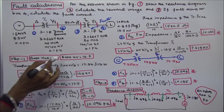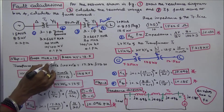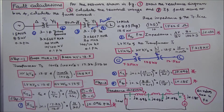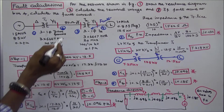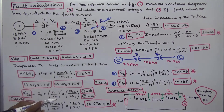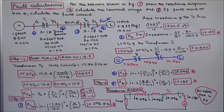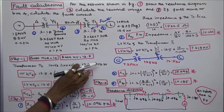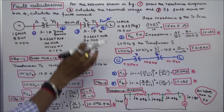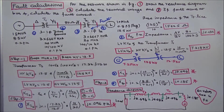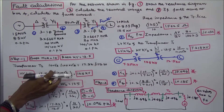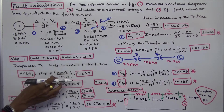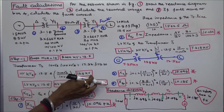Step 1: I choose base MVA and base kV. Base MVA equals 10, base kV equals 12.5. Next I calculate the high voltage kV base. For star connection, line voltage equals root 3 times phase voltage; for delta, line voltage equals phase voltage. Therefore, high voltage kV base equals 12.5 × (100√3) / (10√3), which equals 125 kV — that is the transmission voltage kV base.